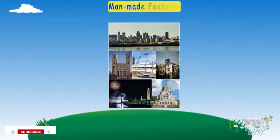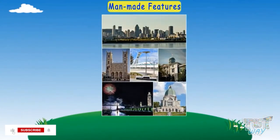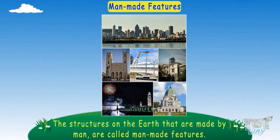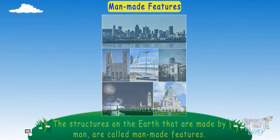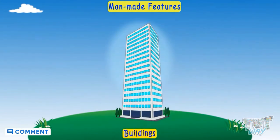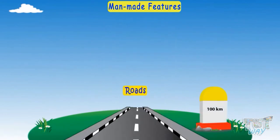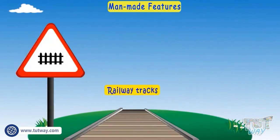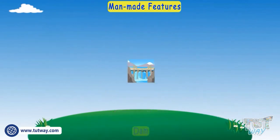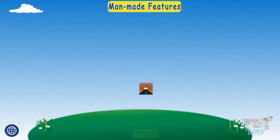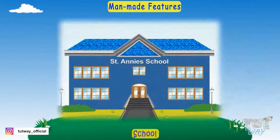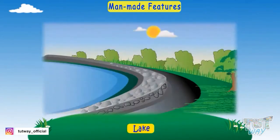Man-made features: these are many structures on Earth that are made by man. Such features are called man-made features, like buildings, roads, railway tracks, dams, tunnels, and schools. These are man-made features.